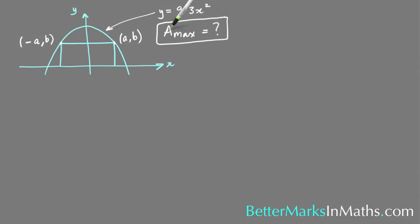To find the maximum area, you're going to have to find the derivative of the area function of the rectangle. The first thing to do is get an expression for the area of the rectangle, which is A equals length times width.